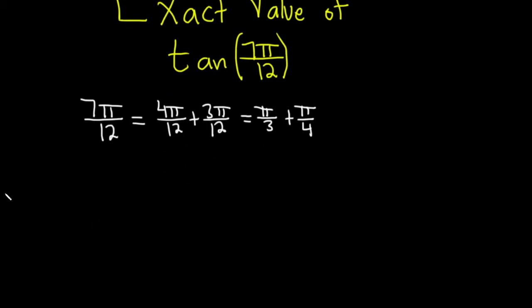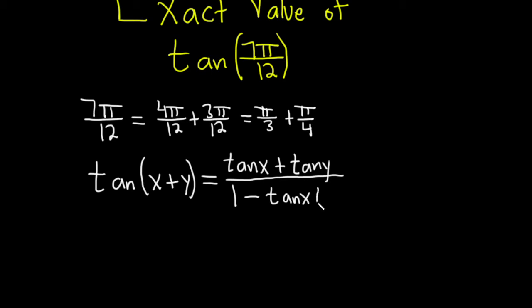So the identity we're going to use tells us that if you have the tangent of x plus y, this is equal to the tangent of x plus the tangent of y, and this is all divided by 1 minus tangent of x tangent of y.